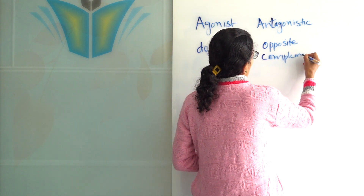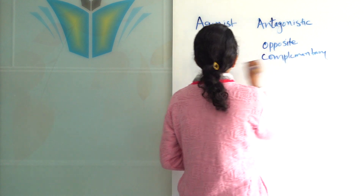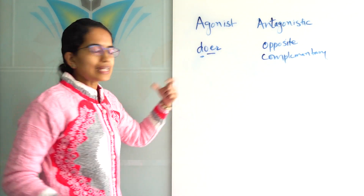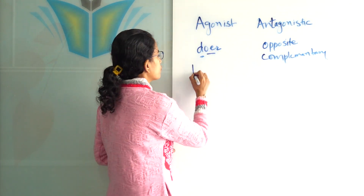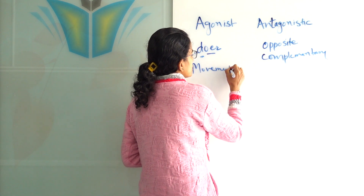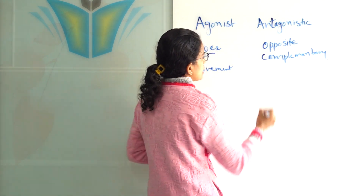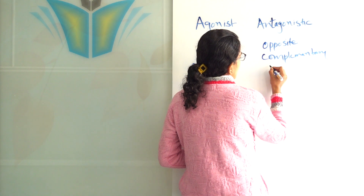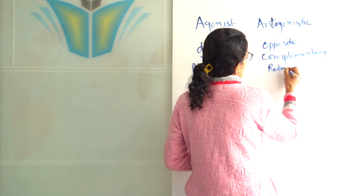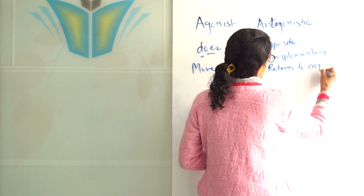Now, the agonist muscle — the doer muscle — brings in the movement. However, the antagonistic muscle is the muscle that brings it back, or returns it to the original position.